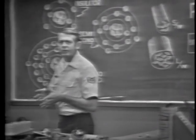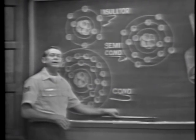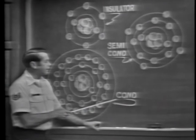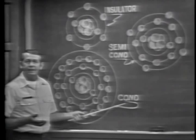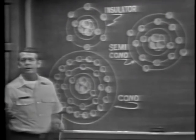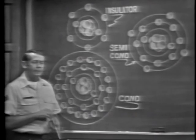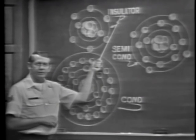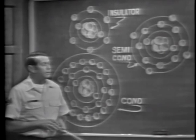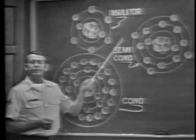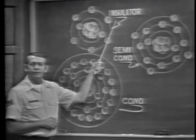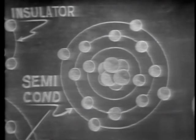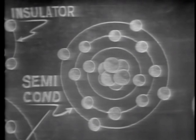Why do some materials offer a lot of opposition and others very little? Basically, it's the atomic structure of the material. Conductors have many free electrons — they allow current to flow with ease and have very little resistance. That's why the copper wire burned up earlier. Insulators have very few free electrons and in most cases prevent current flow, so they have a high resistance. Semiconductor materials have characteristics between conductors and insulators.